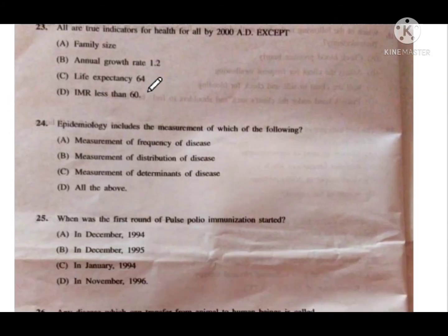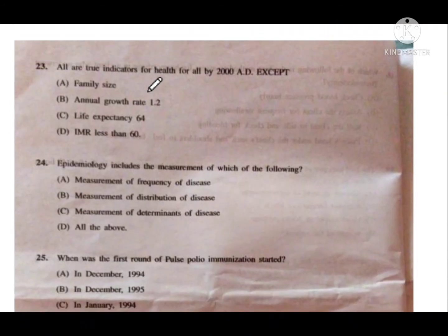Question number 23: All are true indicators for Health for All by 2000 AD except? Option A is family size, B is annual growth rate 1.2, C is life expectancy of 64, and D is IMR less than 60. The correct answer is option A — family size.